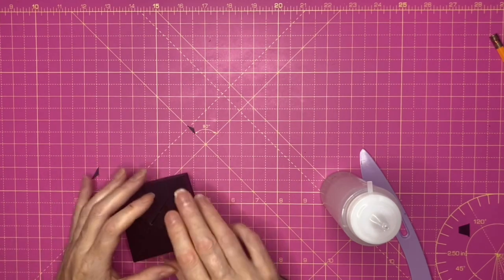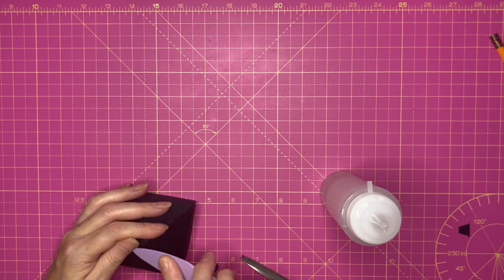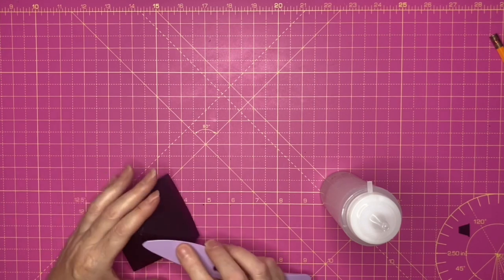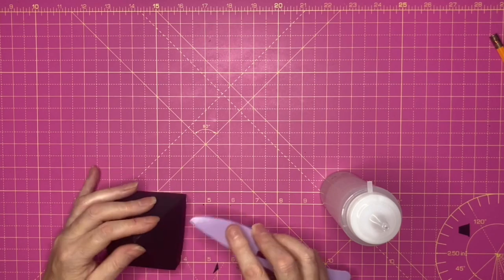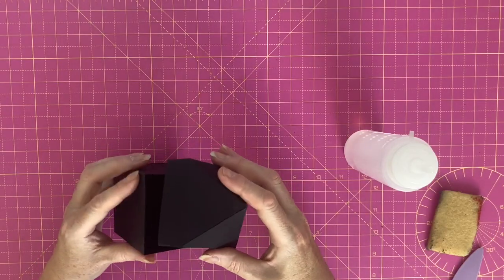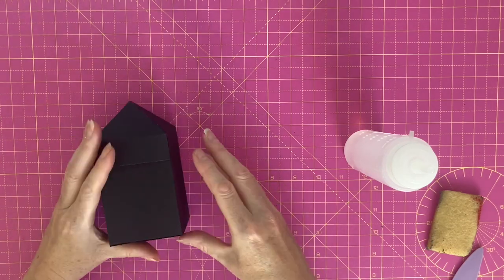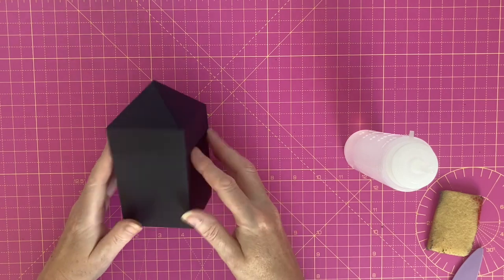There we are. I'm going to tidy that up with my glue rubber, just going to flatten the score line. So I've now finished the lid. You can see that that fits very nicely onto the top, like so.